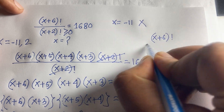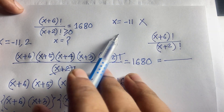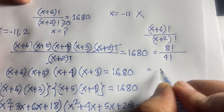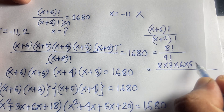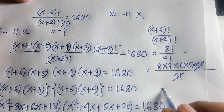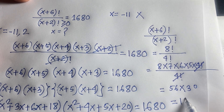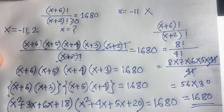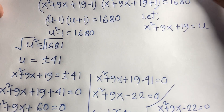Verifying x = 2: (2+6)! / (2+2)! = 8!/4! = 8×7×6×5 = 1680. ✓ Left-hand side equals right-hand side, confirming our answer is x = 2. Thank you — if you enjoyed this video, please subscribe for more!